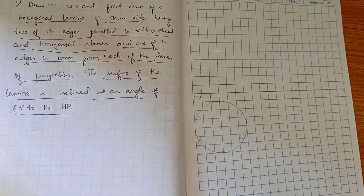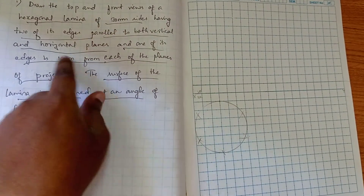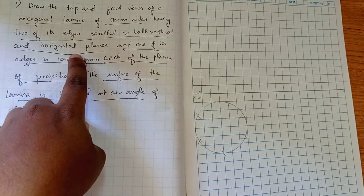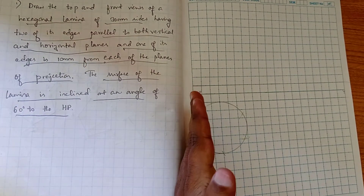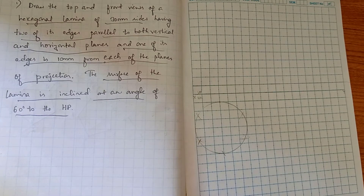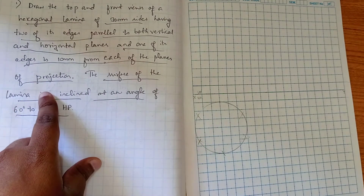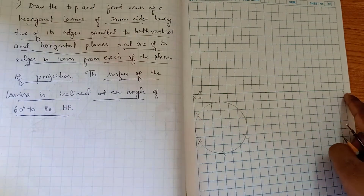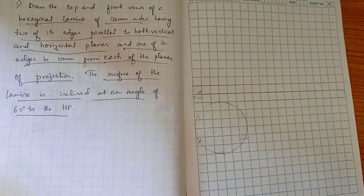We have another problem in hexagonal lamina. In the question we have to construct a hexagon of dimension 30, having two of its edges parallel to both the vertical plane and horizontal plane. We have to take one edge being parallel to both HP and VP, as we did in the pentagon, and consider 10mm from each of the planes of projection.